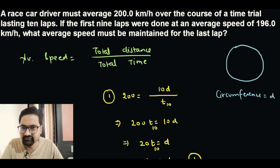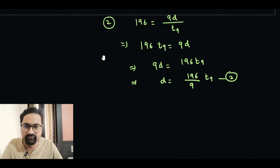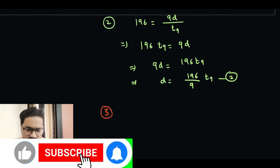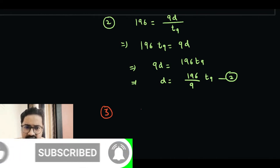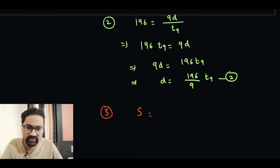What do we have to find? We have to find what is the average speed for the last lap. So we can definitely find another equation which is just for the last lap. Let's say the average speed which we have to find is S. The distance for the last lap, there's only one lap, so that's going to be D over the time for that last lap. Let's say it's T1. So from here we get the value of T1 as D over S. Let's call this equation number three.